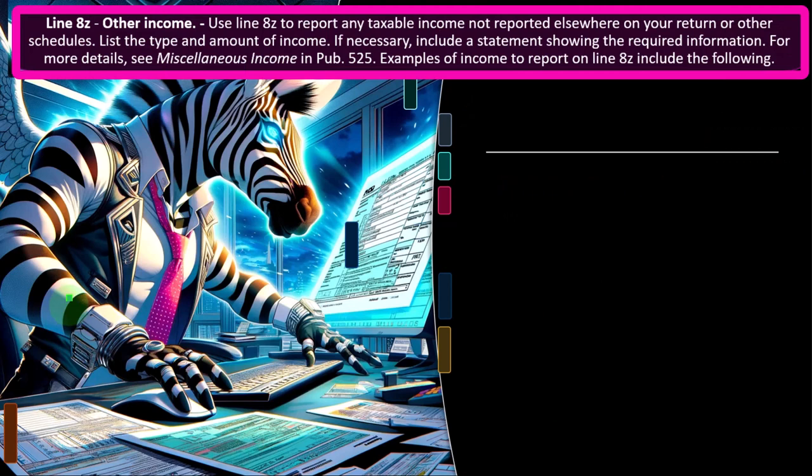Line 8Z — Other Income. Use Line 8Z to report any taxable income not reported elsewhere on your return or other schedules. List the type and amount of income. This is the most generic catch-all line. If you find income you can't put anywhere else, the question is whether it's subject to self-employment tax, in which case it might go on Schedule C, or if not subject to self-employment tax, you want to make sure you're not paying Social Security and Medicare equivalents. See Publication 525 on the IRS website for more details.